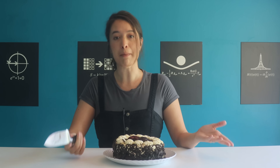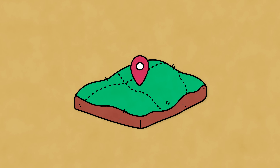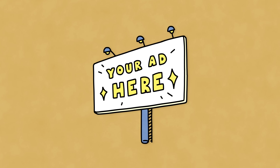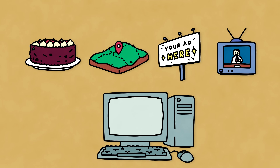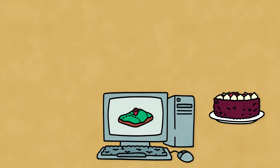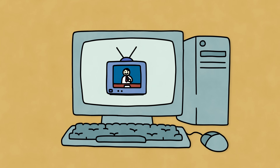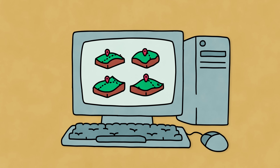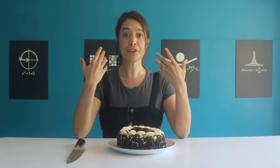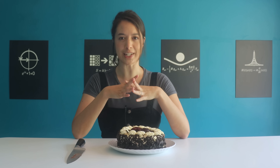Cake is actually a metaphor for any divisible limited resource — a plot of land, advertisement space, or broadcast time. Imagine you could plug any of these situations into a computer, run an algorithm, and it would spit out a division so that everyone was happy. Think of all the fights and lawsuits that could be avoided.